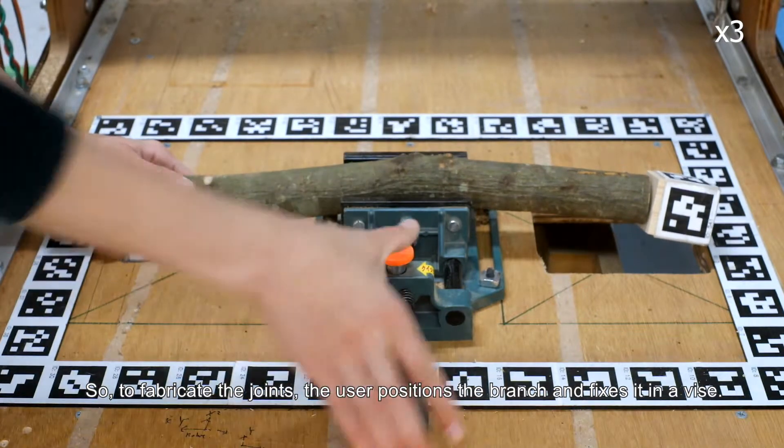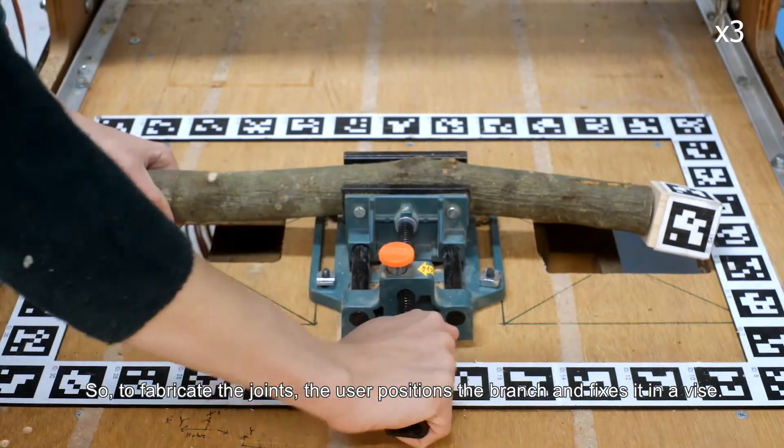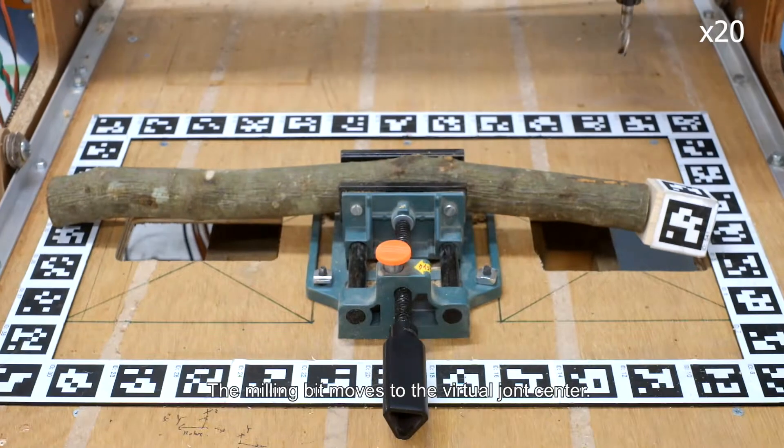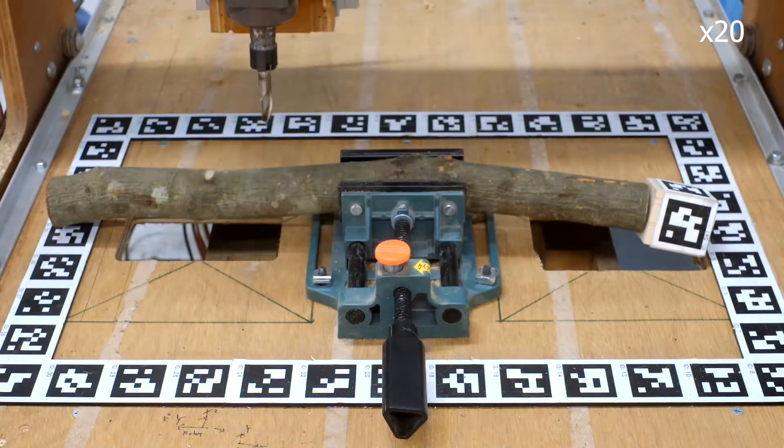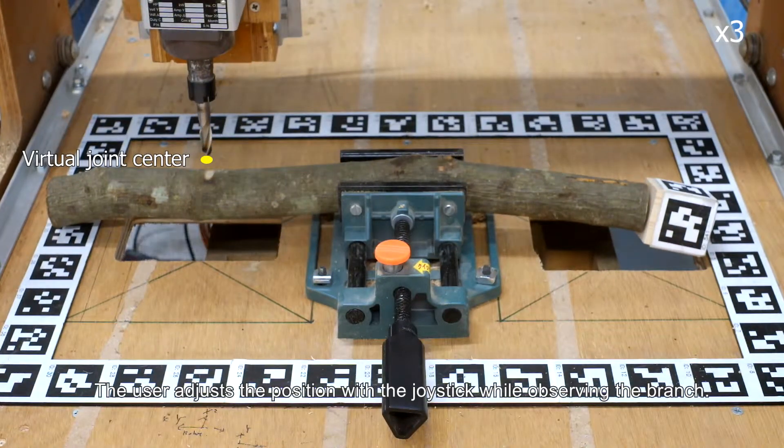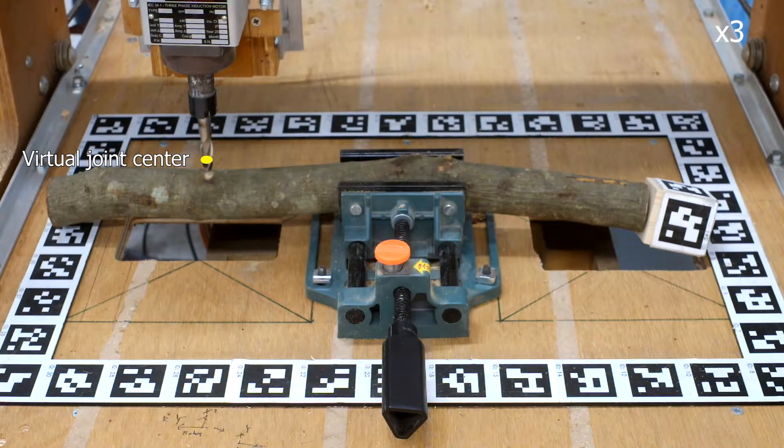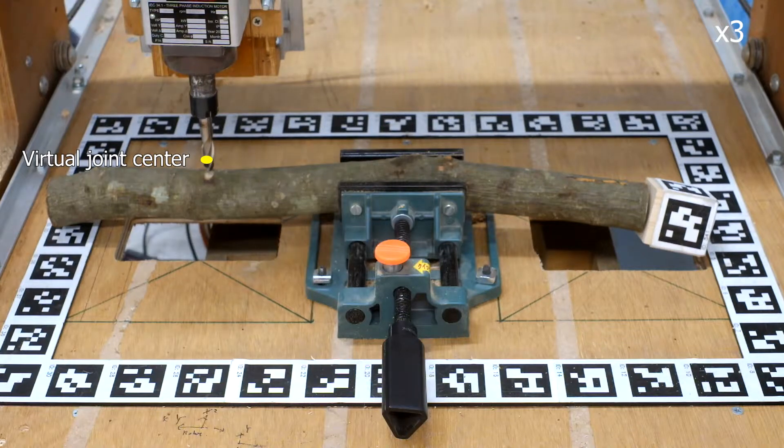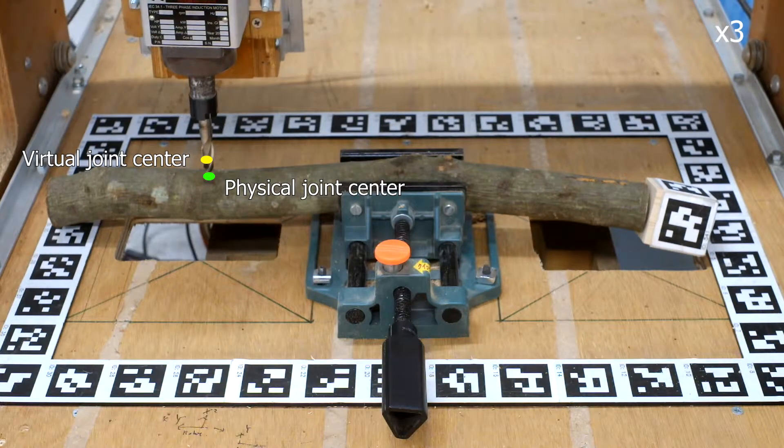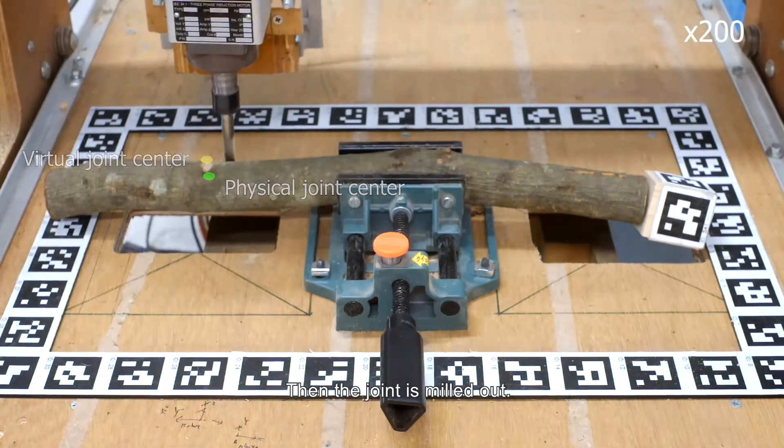To fabricate one joint, the user positions the branch and fixes it in the vise. The milling bit moves to the virtual joint center. The user adjusts the position with the joystick while observing the branch. Then, the joint is milled out.